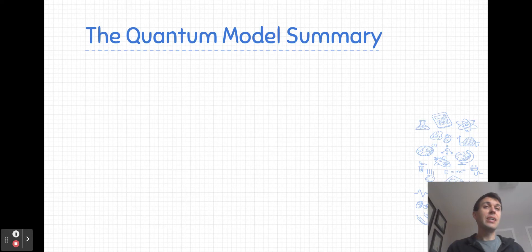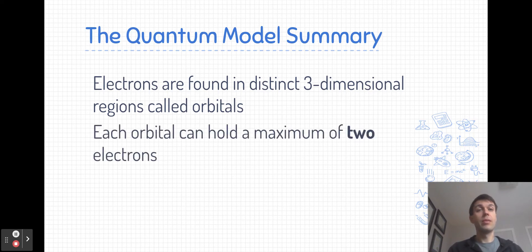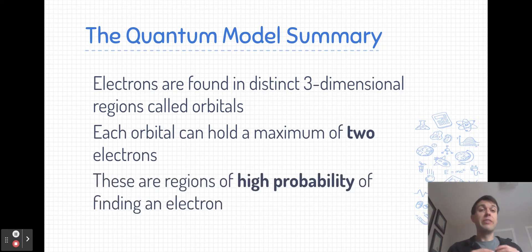Now let's summarize this and put together an electronic structure of the atom. The electrons themselves are most likely to be found in these three-dimensional regions called orbitals. Each orbital has a capacity of two electrons. We define an orbital as regions of high probability of finding an electron, recognizing that an electron could be outside of that orbital, but if we're likely to find it, it's going to be in that region in space.